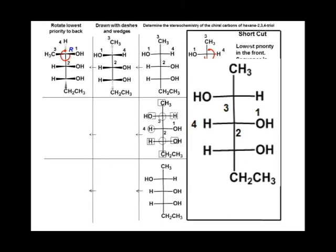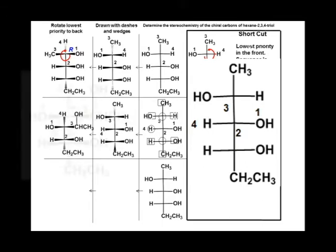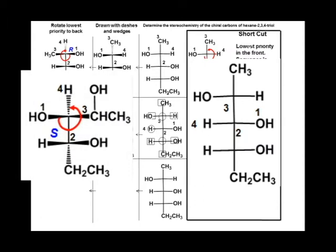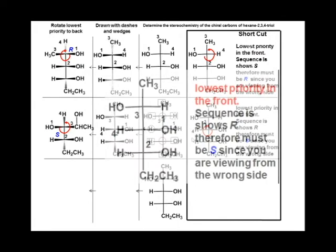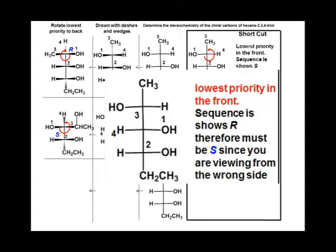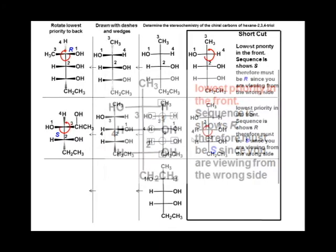Draw as wedges and dashes to visualize the Fisher projection. Rotate the hydrogen to the back, and we see we have an S configuration. If we just looked at the Fisher projection, the sequence is going clockwise. If we were looking at the molecule from the other side, the sequence would be anti-clockwise, and thus the chiral carbon has an S configuration.